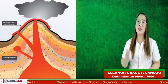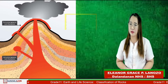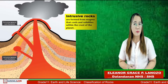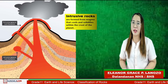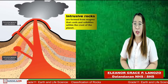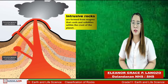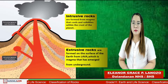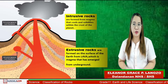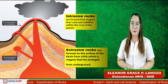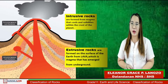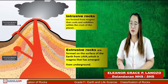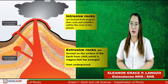We also have two kinds of igneous rocks. The first one is intrusive rocks, which are formed from magma that cools and solidifies within the crust of the planet Earth. The second one is extrusive rock, which is formed from the surface of the Earth from lava — magma that has emerged from underground.